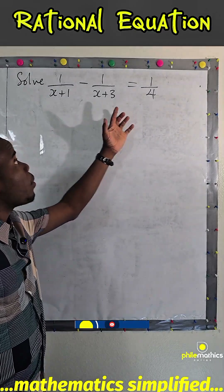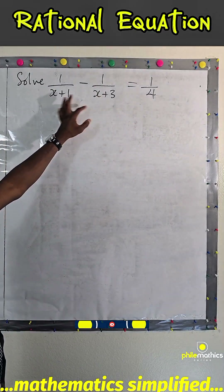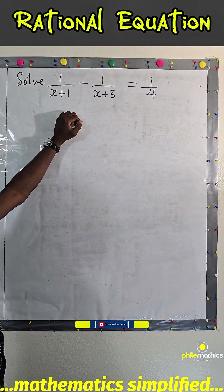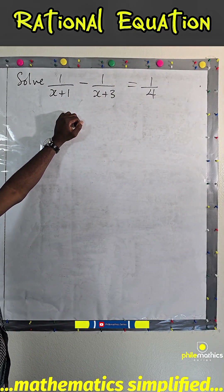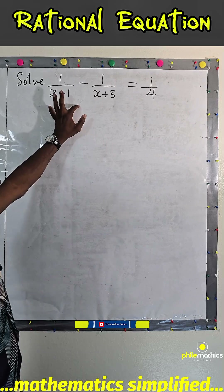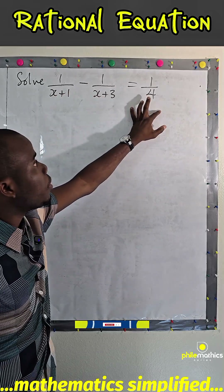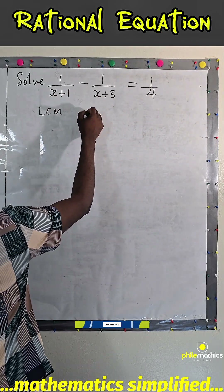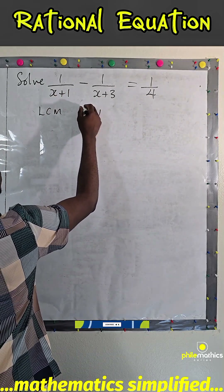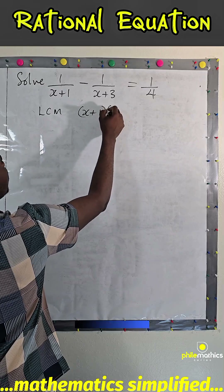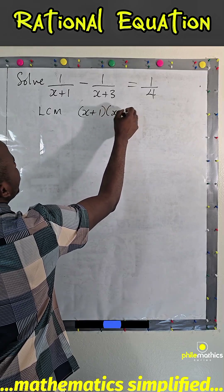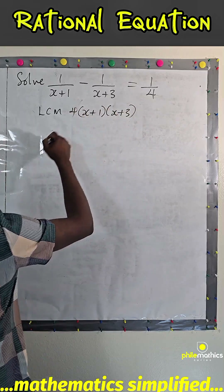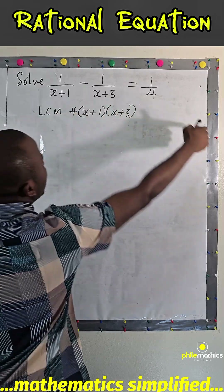To solve this problem, we can multiply through by the LCM. The LCM is just the product of the denominators. The LCM is (x+1)(x+3) times 4.